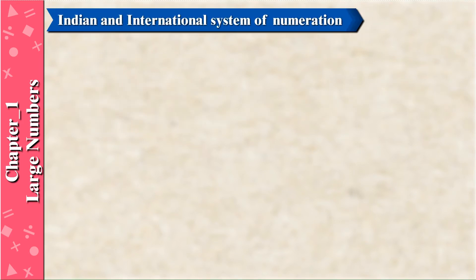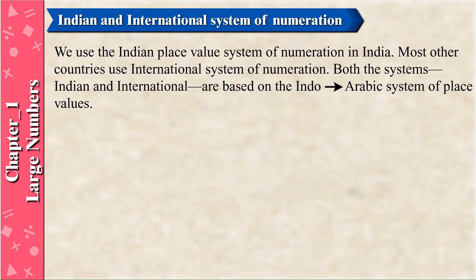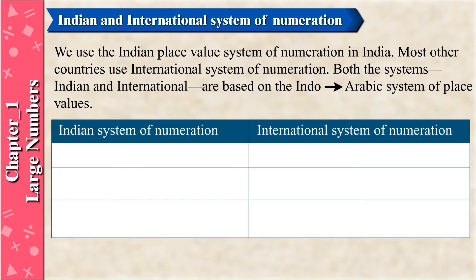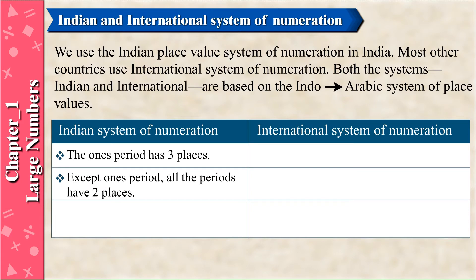Indian and International systems of numeration. We use the Indian place value system of numeration in India. Most other countries use the International system. Both systems are based on the Indo-Arabic system of place values. In the Indian system, the ones period has three places; except the ones period, all other periods have two places.